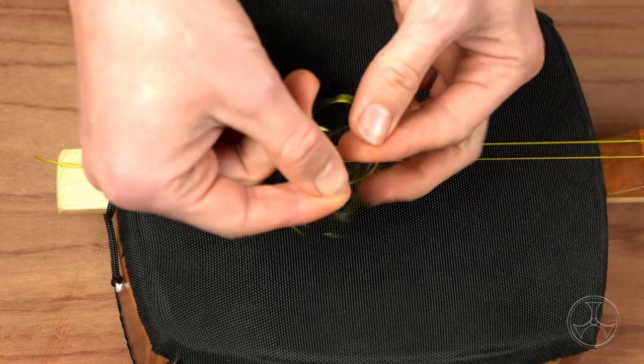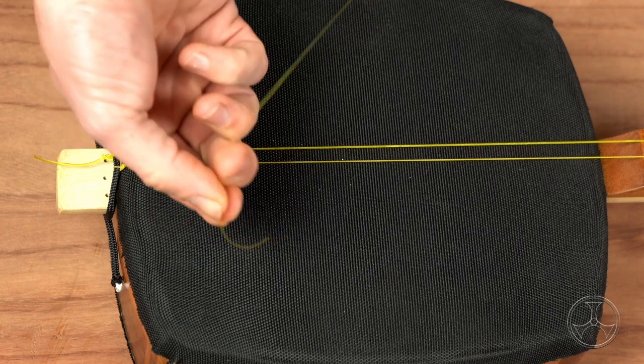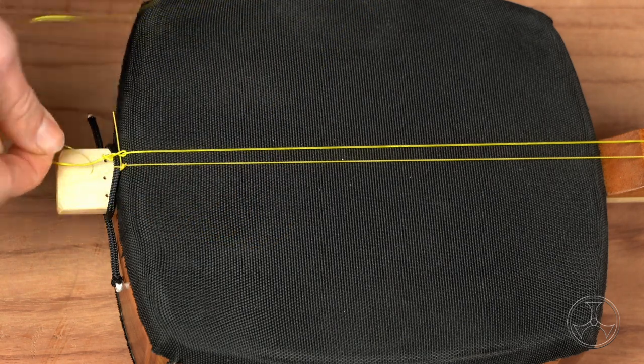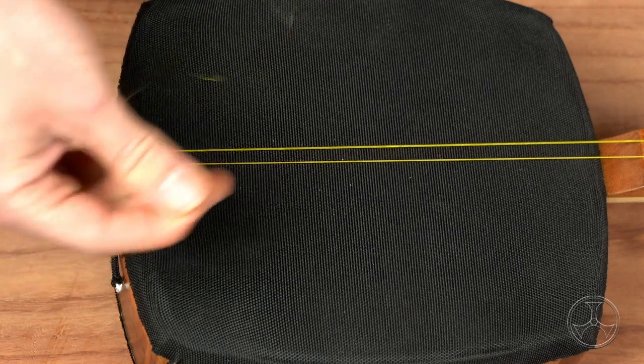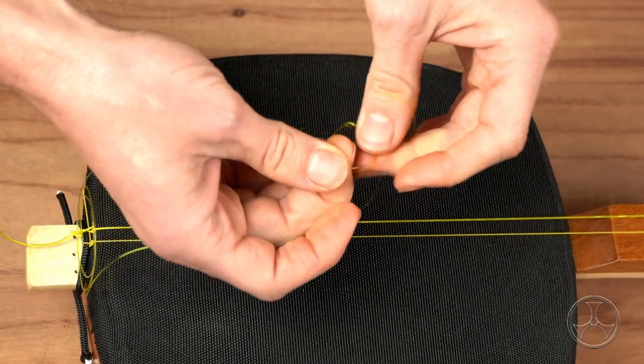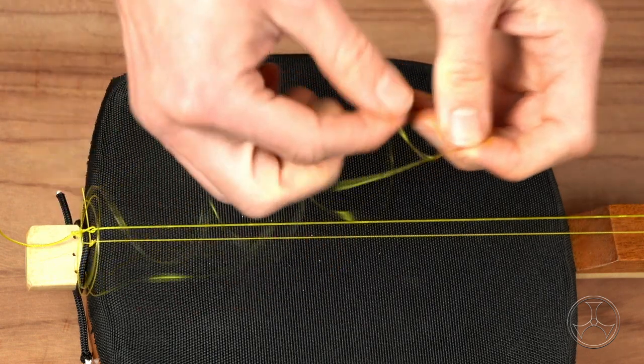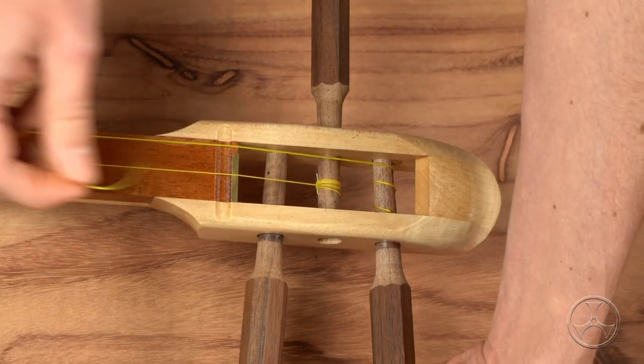Got our loop. Secure the loop like so. Get the loose end here, feed it through the tail piece. Grab it. Put it through the loop and tighten.